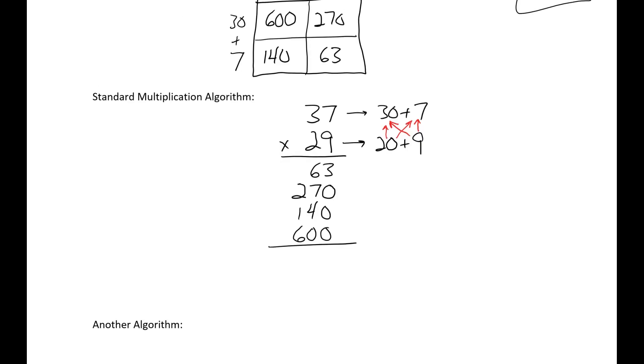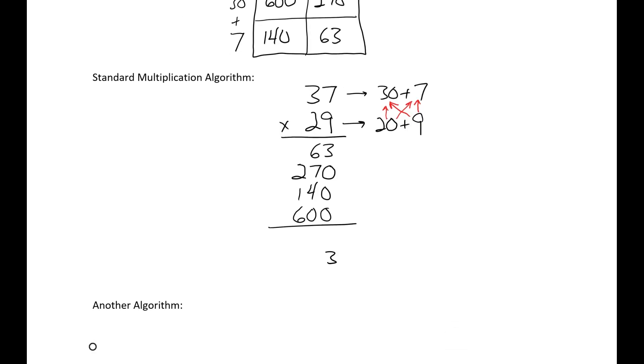And when I add them up again, 3, 4, 17, 1, and I have 8, 9, and I get 1,073.